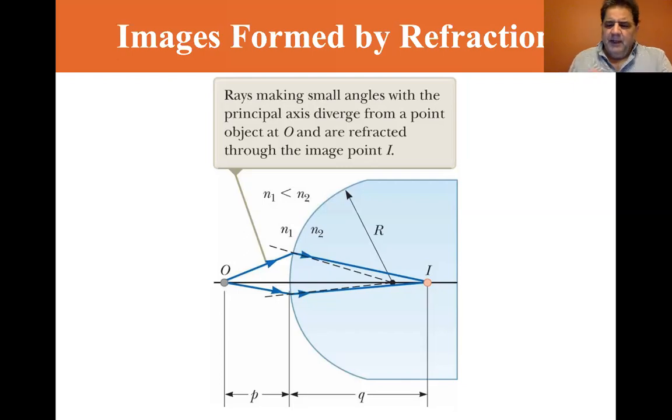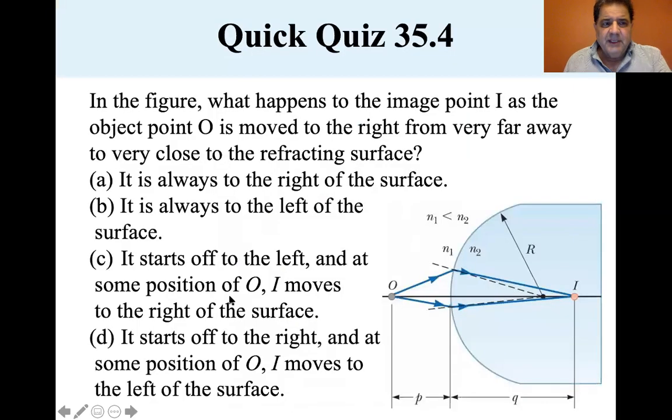Now we start off with Quick Quiz 35.4. In the figure, what happens to the image point as the object point O is moved to the right from very far away to very close to the refracting surface? Option A: It is always to the right of the surface. B: It is always to the left. C: It starts off to the left and moves to the right. D: It starts off to the right and moves to the left.